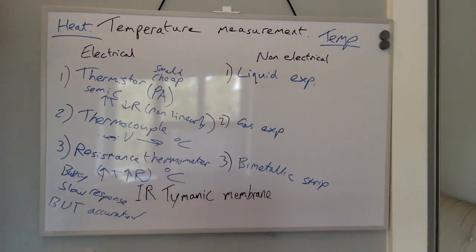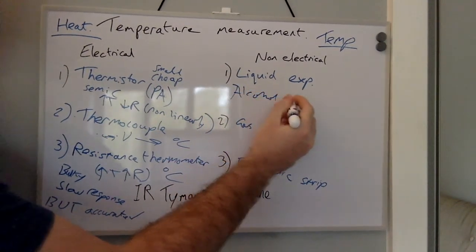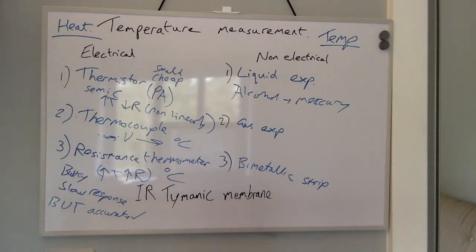Liquid expansion thermometers include alcohol and mercury. Gas expansion thermometers work on the principle that there is volumetric expansion of gas with temperature increase.